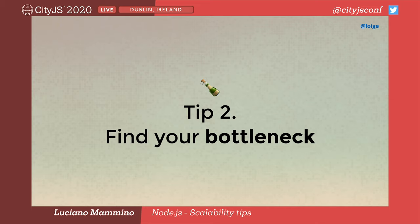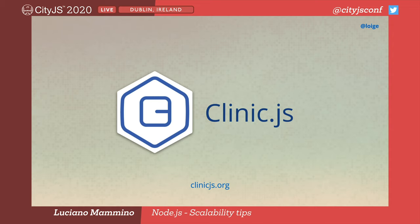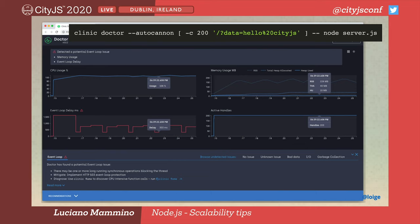Now that we know there's room to improve, how do we find the bottleneck of our application? I want to introduce a suite of tools called Clinic.js that allows us to troubleshoot and find out bottlenecks in Node.js applications. It's very complicated to give a comprehensive demo, so I recommend checking out the website — there's a video that goes through all the tools with a real application and shows a number of improvements.